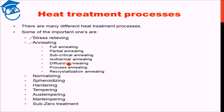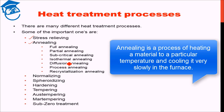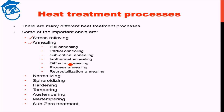Annealing is basically heating a material to a particular temperature, holding it there for some time, and then cooling it very slowly. The cooling is done either in the furnace itself, known as furnace cooling, or under a different environment where the cooling rate is very low. Then we have normalizing.